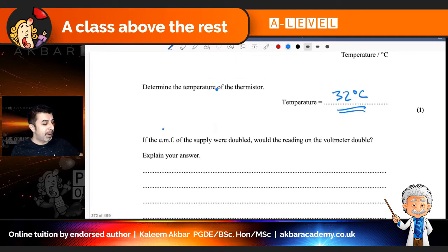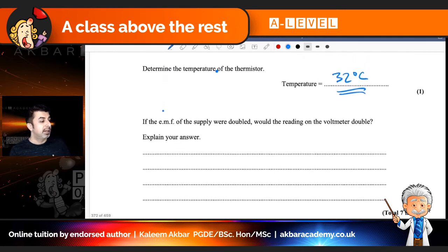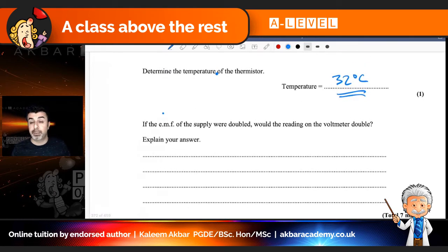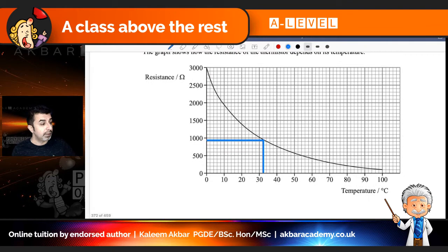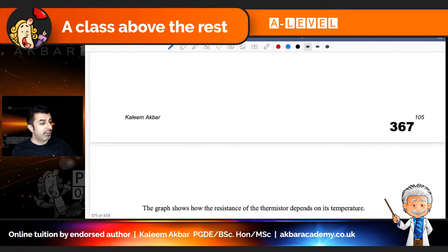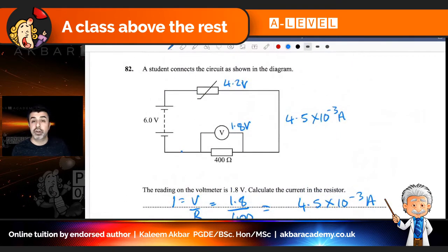Then the next part of this question, the last part says, if the EMF of the supply was doubled, would the reading on the voltmeter double? And then it says, explain your answer. So remember, we have got the voltmeter currently reads 1.8 volts. And what they're saying is, if I made this 12 volts instead, would the voltage here become 3.6?